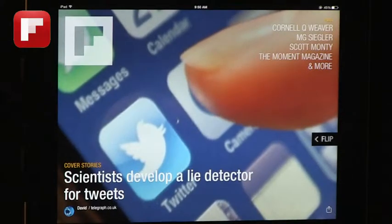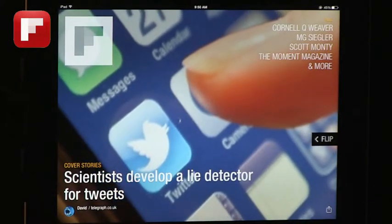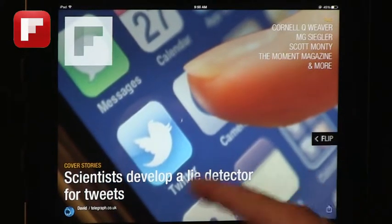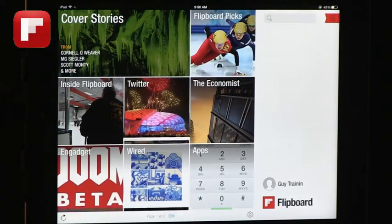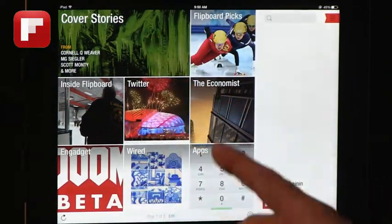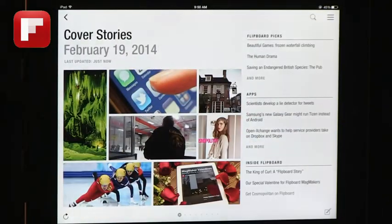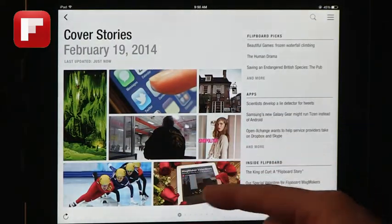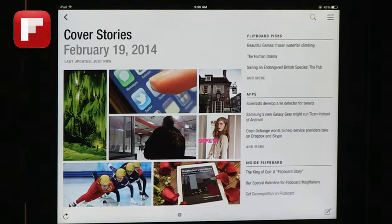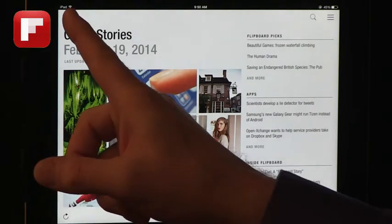What Flipboard does is it allows you to take your media streams and add to them and create a magazine-like format. So this is my cover stories. It includes a collection from everything that I'm pulling from, and it's got some things about the Olympics, apps, and other things that I pay attention to.